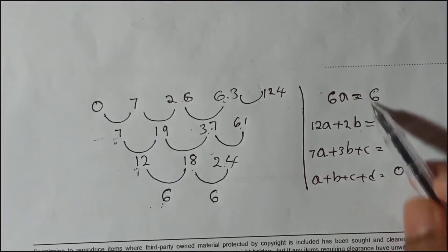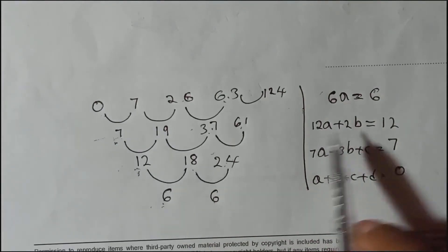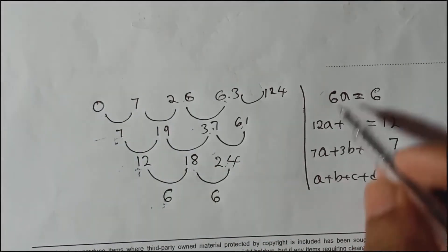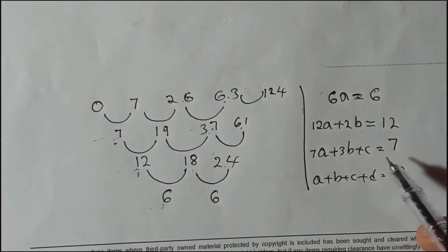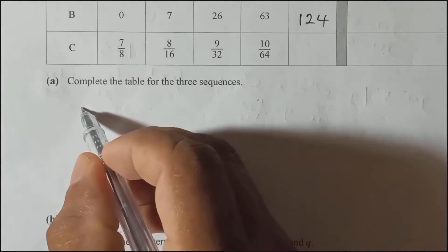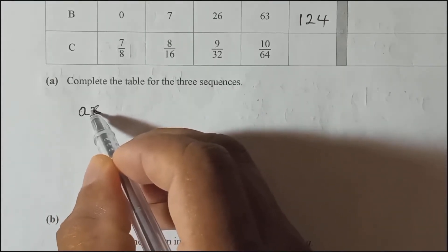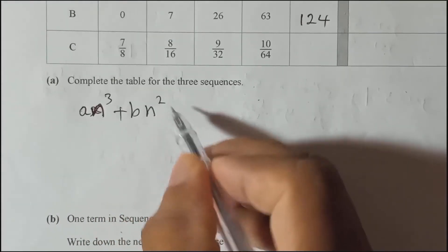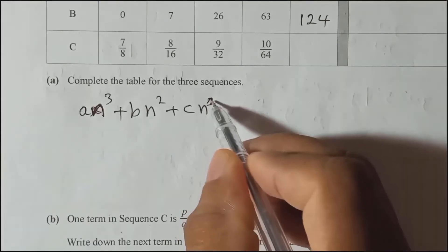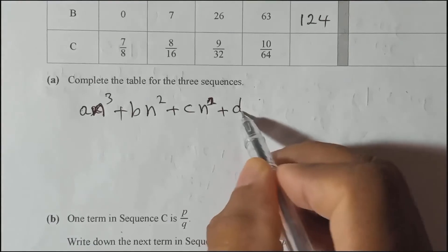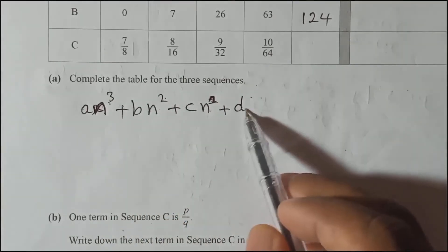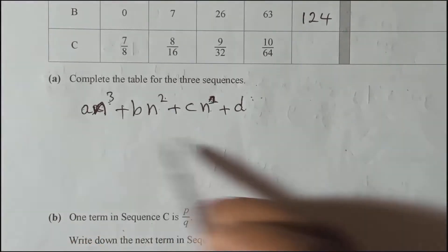Actually, there's a kind of pattern to remember. Try to see this pattern: the cubic formula is An³ + Bn² + Cn¹ + D, where n⁰ equals 1 so D stands alone. You need to find A, B, C, D and substitute to get the nth term.